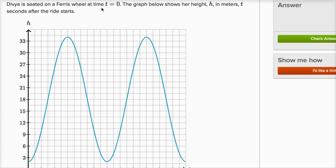We're told Divya is seated on a Ferris wheel at time t equals zero. The graph below shows her height h in meters t seconds after the ride starts.